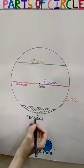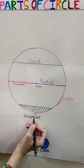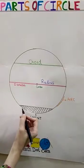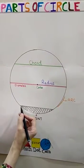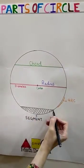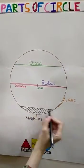This is the segment of the circle. A segment is basically bounded by an arc and a chord of a circle.